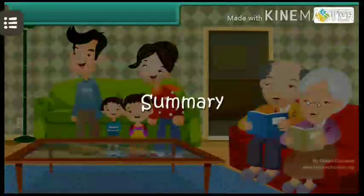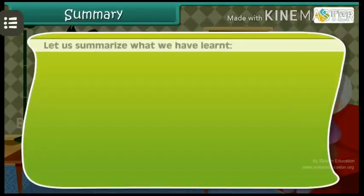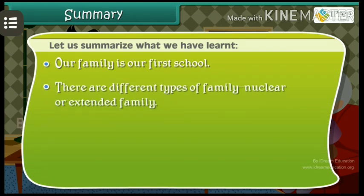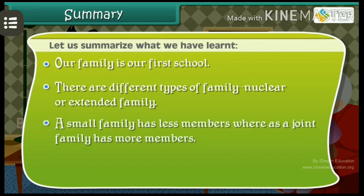Let us summarize what we have learned. Our family is our first school. There are different types of family — nuclear or extended. A small family has fewer members whereas a joint family has more members.